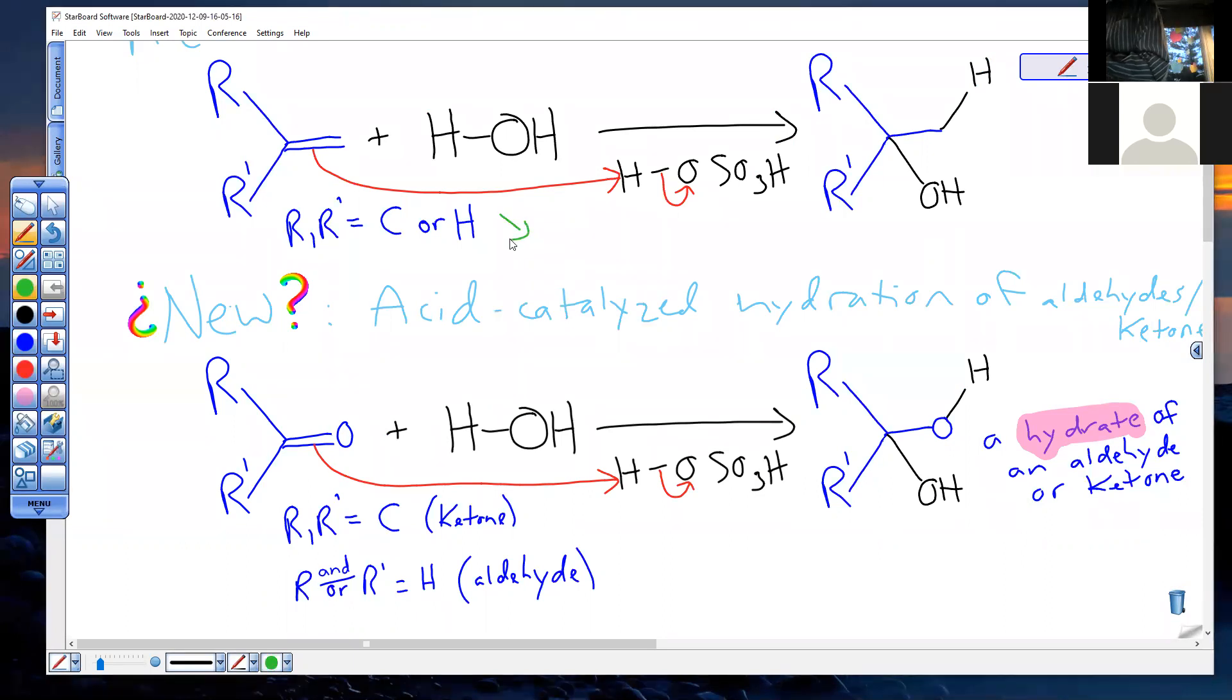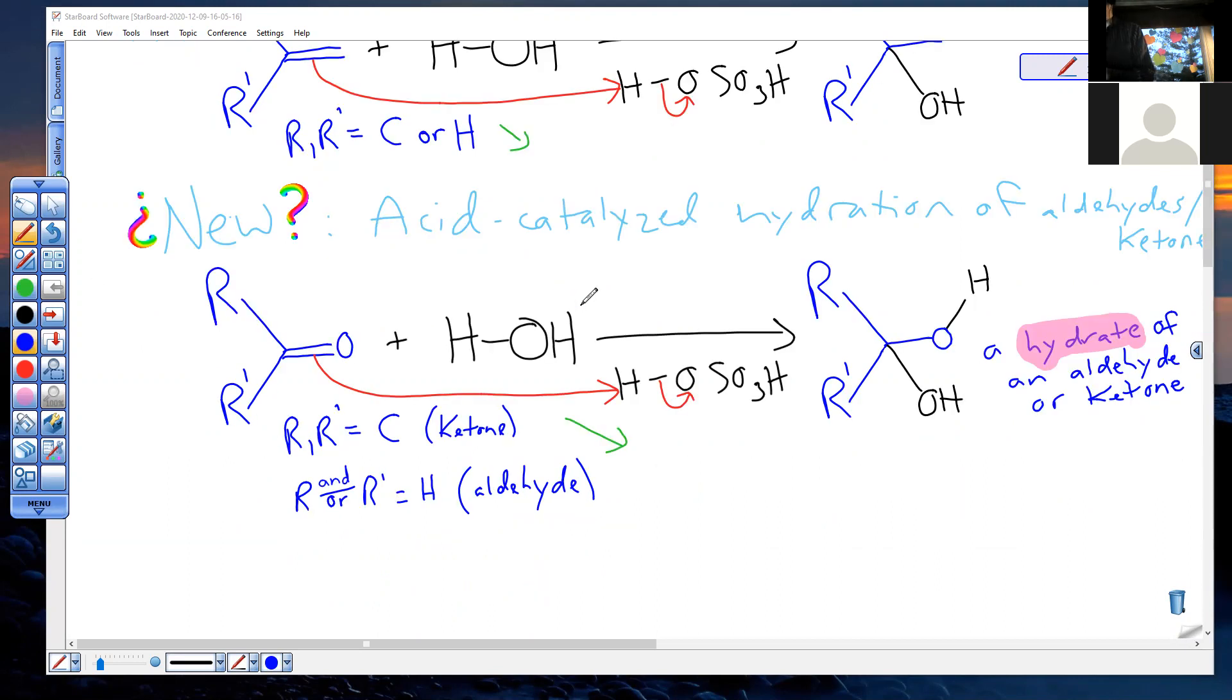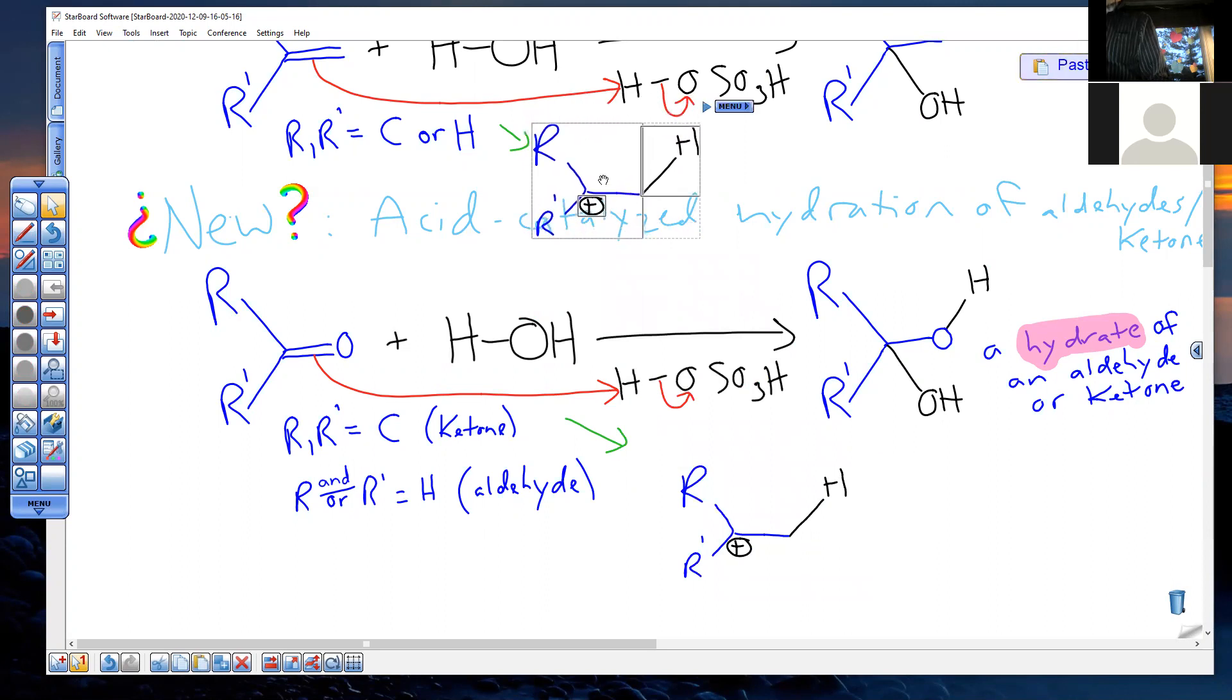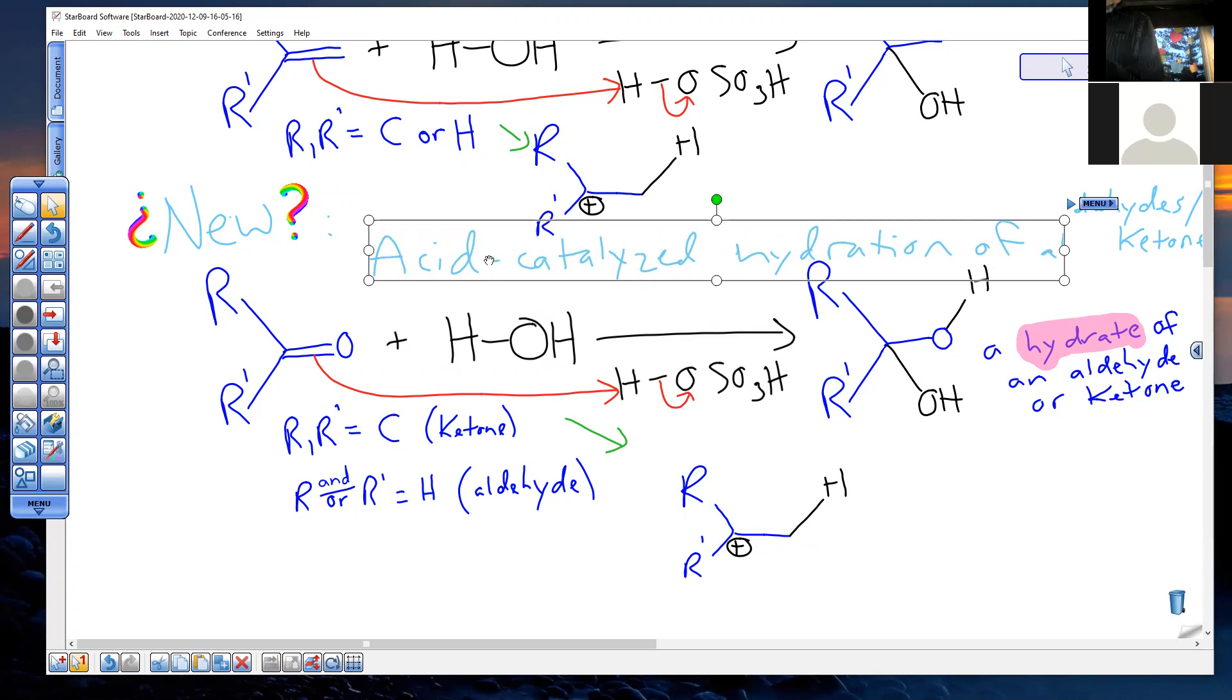So we would generate the more stable carbocation in both circumstances. I'll draw it down here so I can copy paste it. You want to put the H up here so you can generate a cation here. Over here, the only difference is we have an oxygen here. And that actually makes this bottom reaction thousands of times faster. Much faster than above.